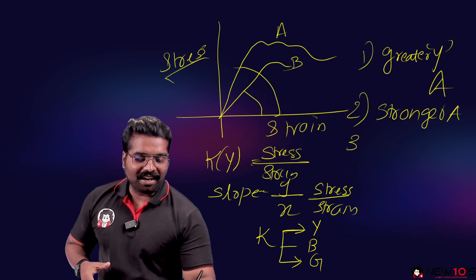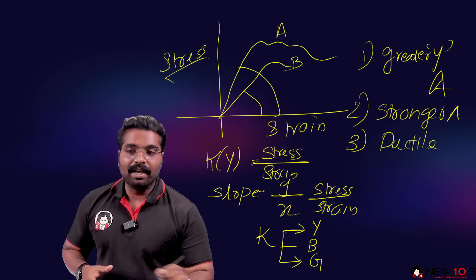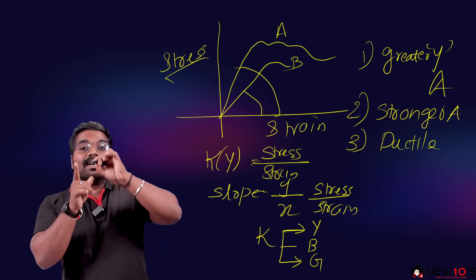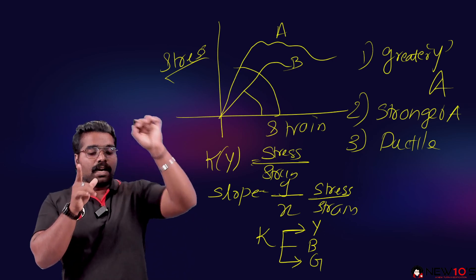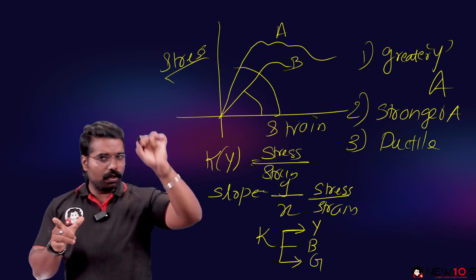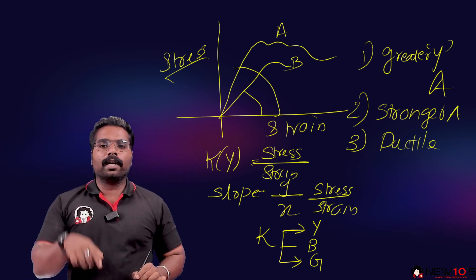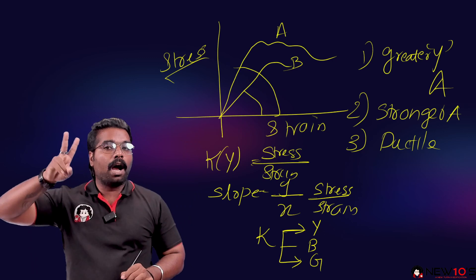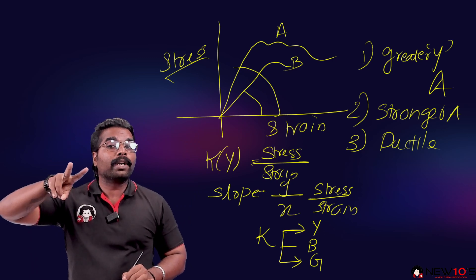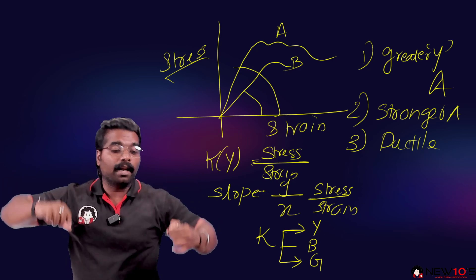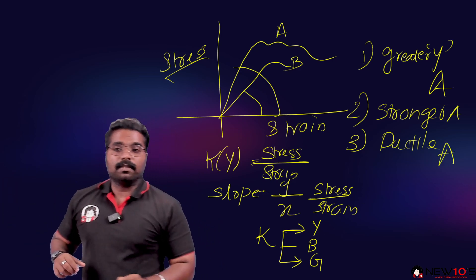Now we are talking about ductile materials. What is a ductile material? For a ductile material, the ultimate stress point and the breaking point are different — the breaking point is lower than the ultimate stress. That is the characteristic of a ductile material.